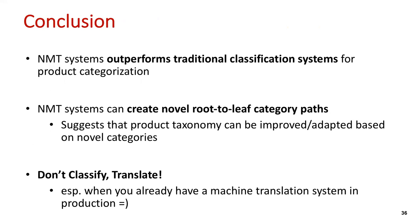In conclusion, we showed that neural machine translation systems outperform traditional classification systems for product categorization. We showed that the neural machine translation system can create new root-to-leaf category paths and suggest that the taxonomy can be improved or adapted based on new categories. Finally, don't classify — just translate, especially when you already have a machine translation system in production. That's all; if you have any questions, write us an email and ask away. Thank you.